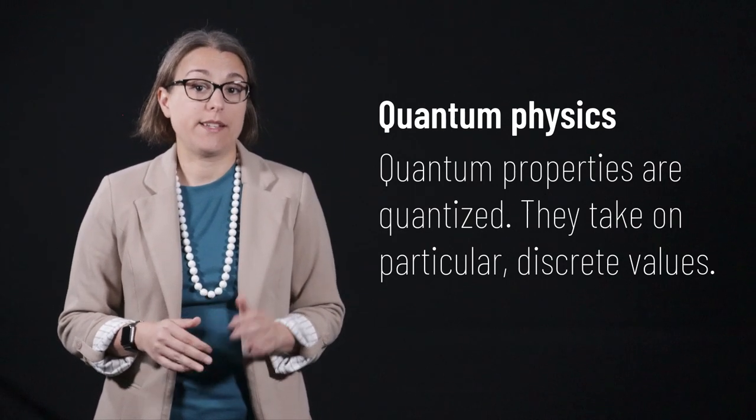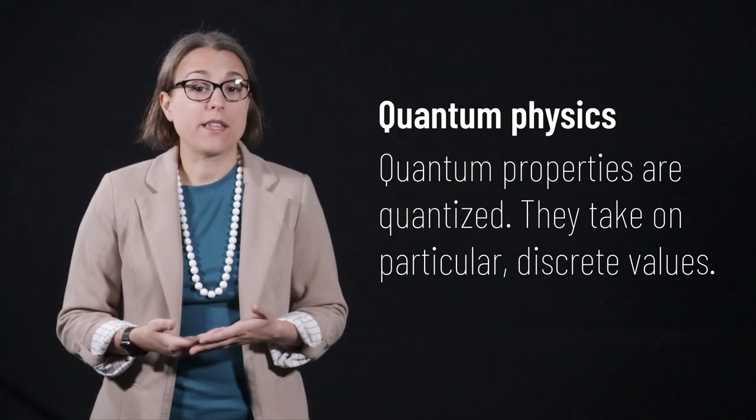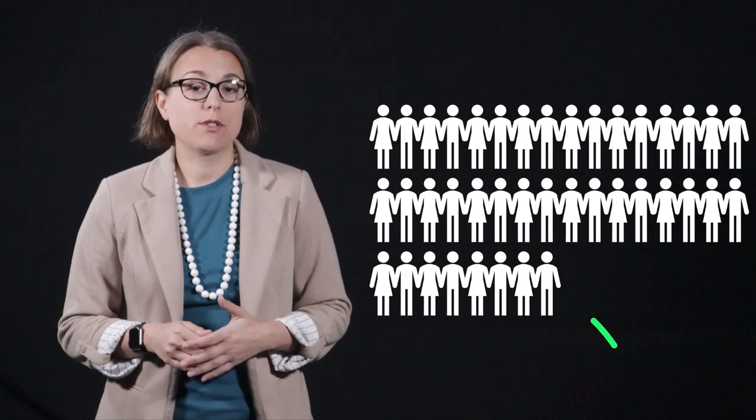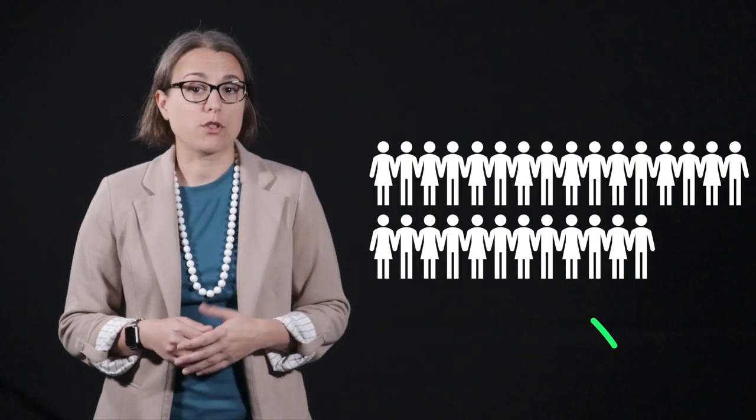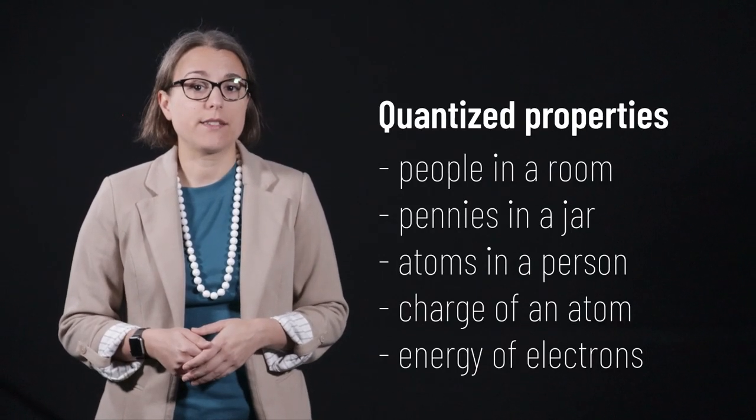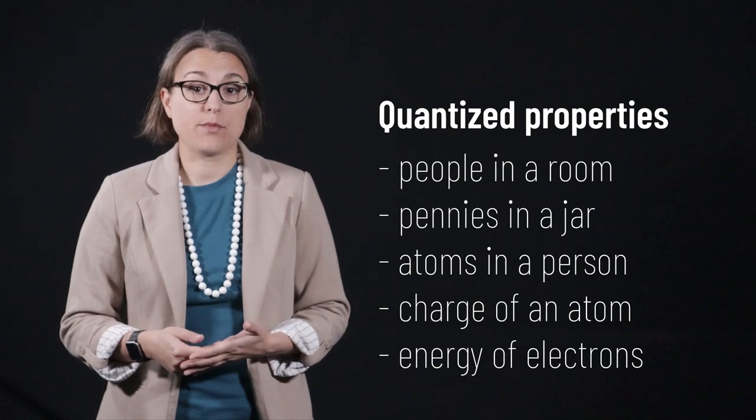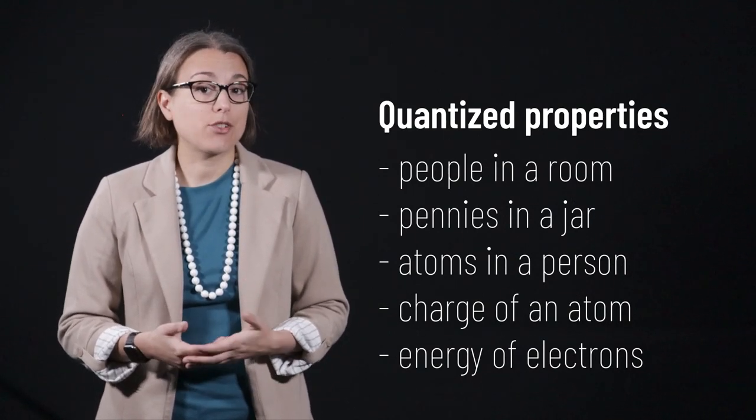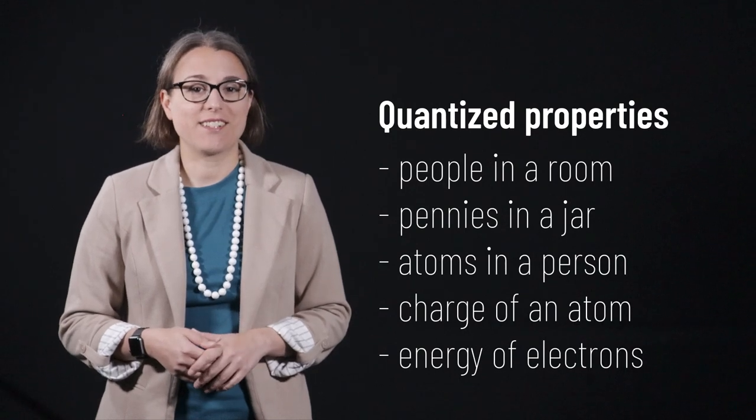A quantity that is quantized is something that only takes on certain, well-defined values. For example, the number of people in a room is a quantized property. There can be a room filled with 40 people or 28, but not four and a half people. The number of pennies in a jar is quantized, as is the number of atoms in a person, the charge of an atom, or the energy of electrons in an atom, as we discussed in lecture 30.